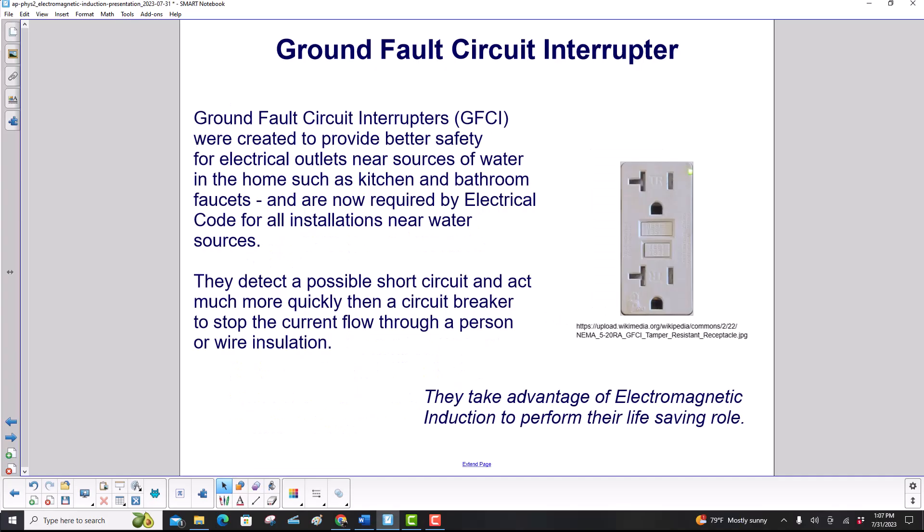Ground fault circuit interrupters, abbreviated GFCI, were created to provide better safety for electrical outlets near sources of water in the home, such as kitchen and bathroom faucets, and are now required by electrical code for all new installations near water sources. They detect a possible short circuit and act much more quickly than a circuit breaker to stop the current flow through a person or wire insulation. They take advantage of electromagnetic induction to perform their life-saving role.